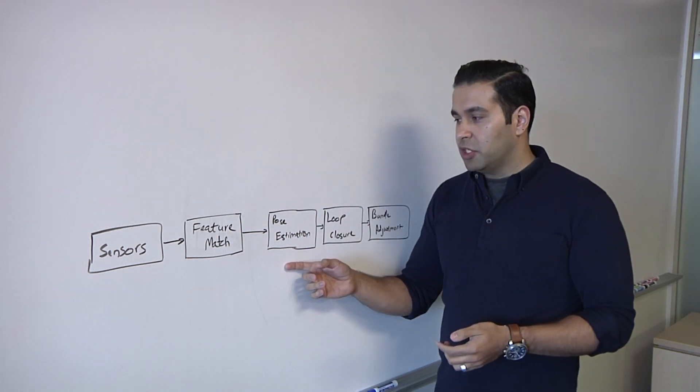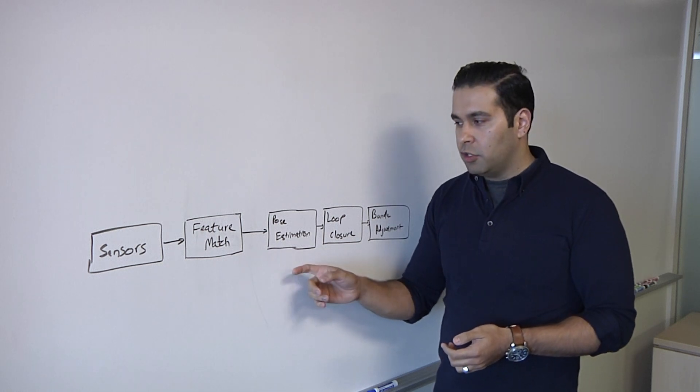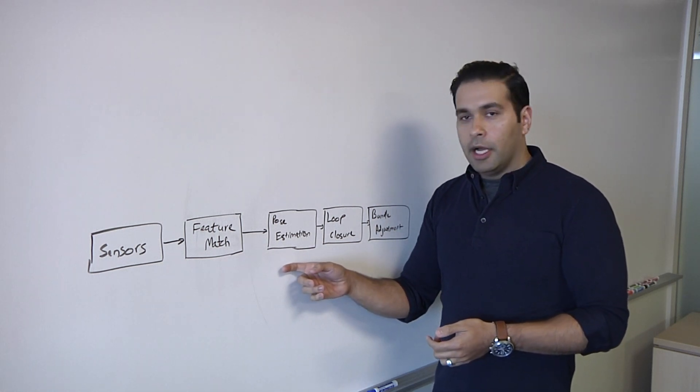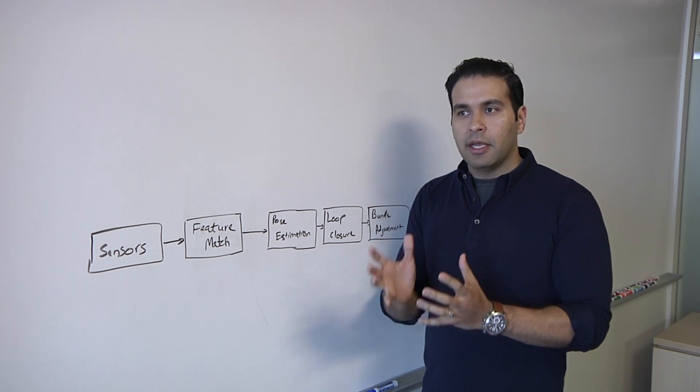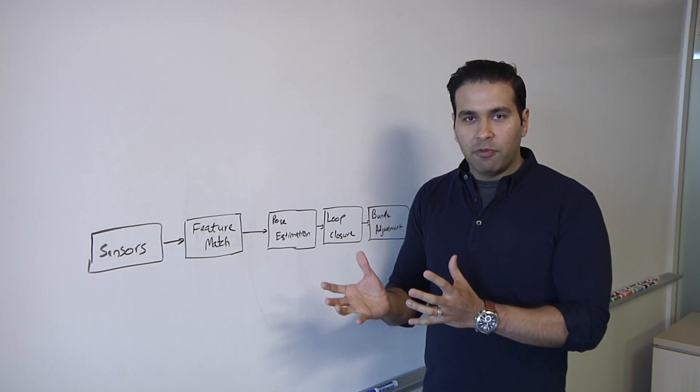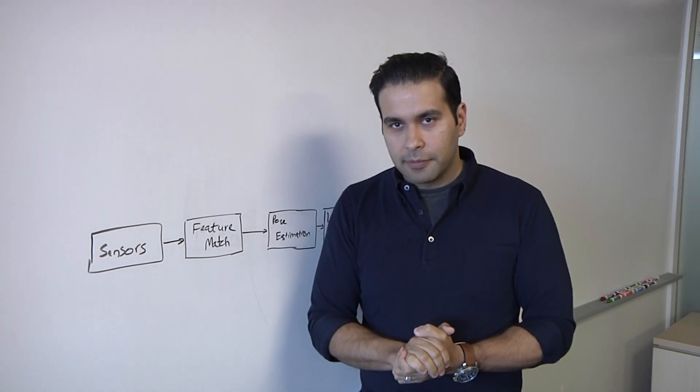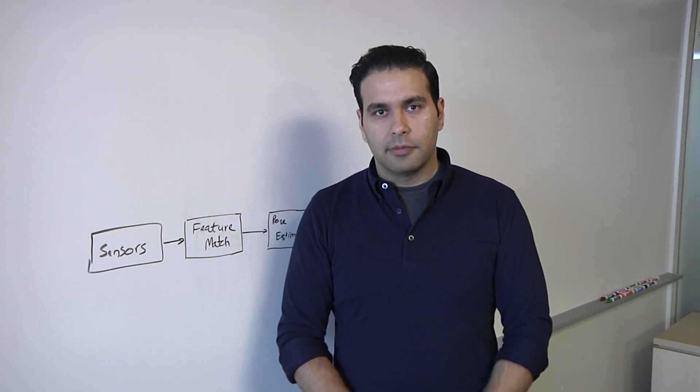Moving now to the pose estimation stage, you take these features that you have found right over here, and you identify how they move from one frame to the next. That allows you to estimate how the camera or the object has moved from one frame to the next.